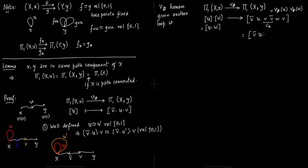Since v·v̄ is just the constant function, we skip that. So u composed with the constant function just gives u, and you get u·w with v̄ in front and v behind. This is nothing but v#(u)·v#(w), so we get a proper homomorphism.